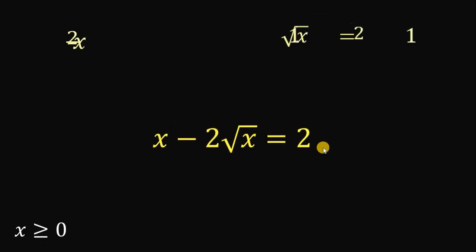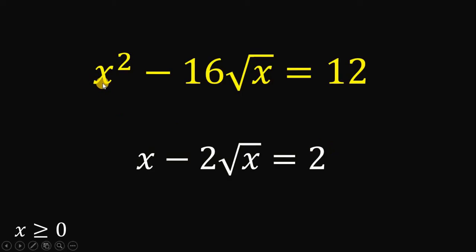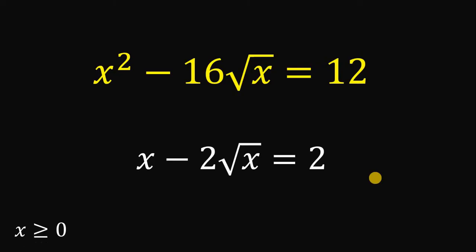Therefore, given that x squared minus 16 times square root of x equals 12, the value of x minus 2 times square root of x must be 2. And as always, we are done.